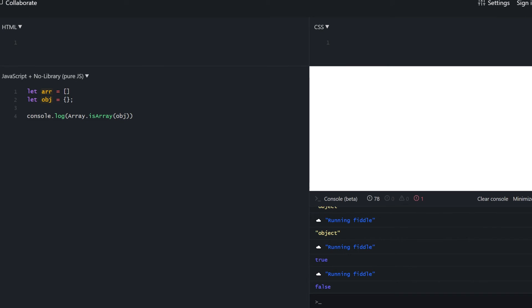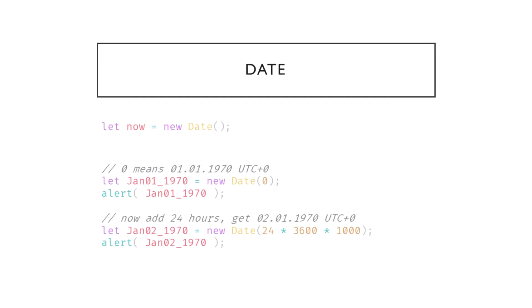Let's meet a new built-in object: Date. It stores the date, time, and provides methods for their management. We can use it to store creation or modification times, measure time, or print the current date. To create a new date, call the Date constructor. With no arguments it creates a date with the current date and time. With a single integer argument it creates a date with the specified milliseconds passed since January 1st, 1970 UTC 0 — also called the UNIX timestamp.